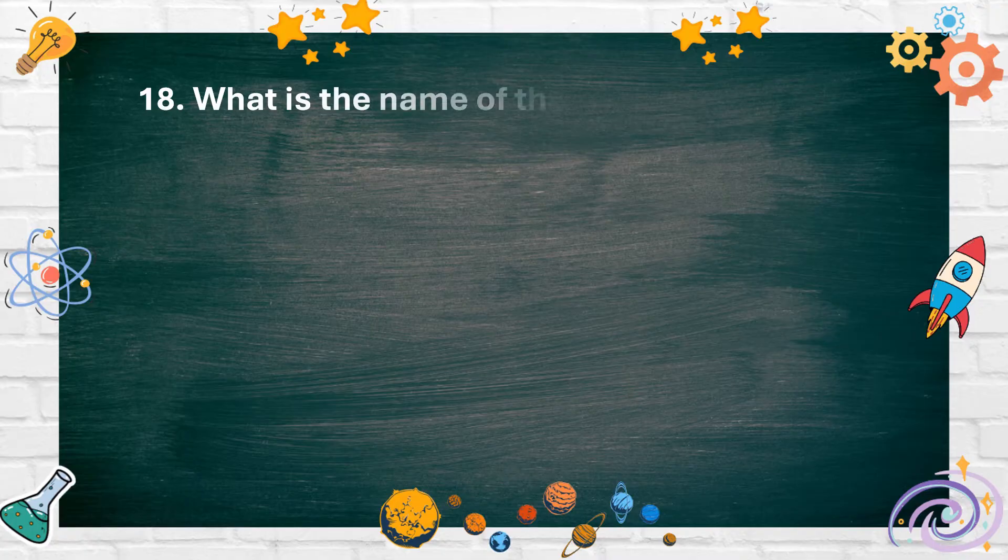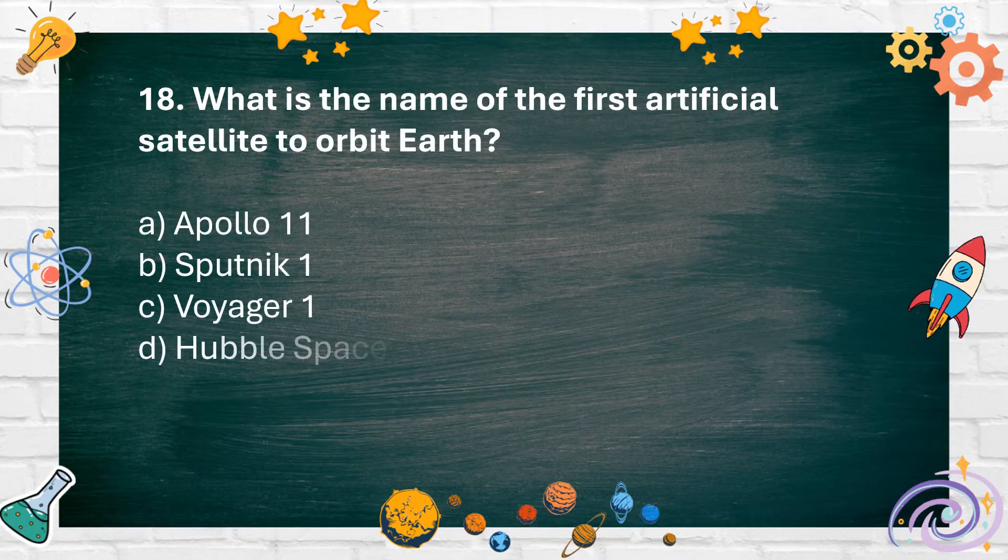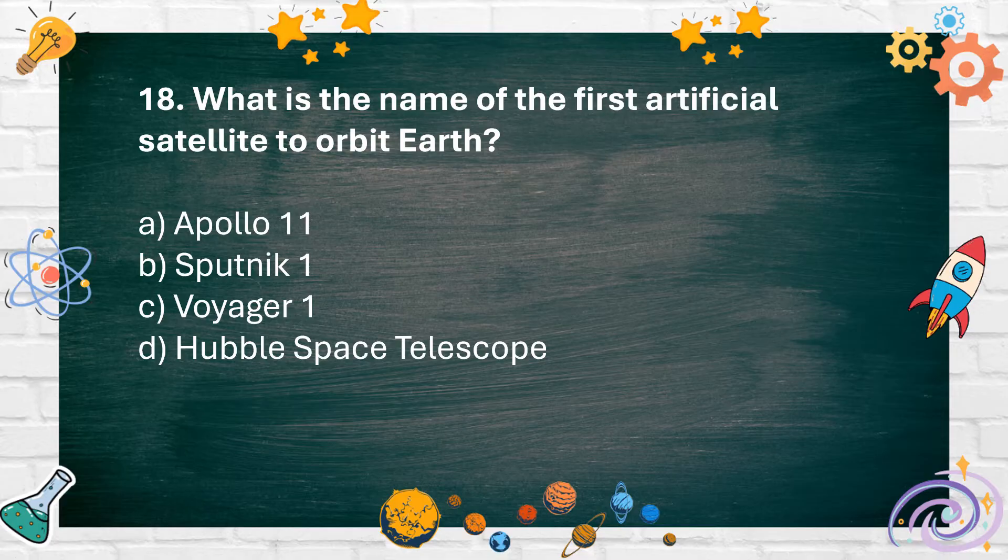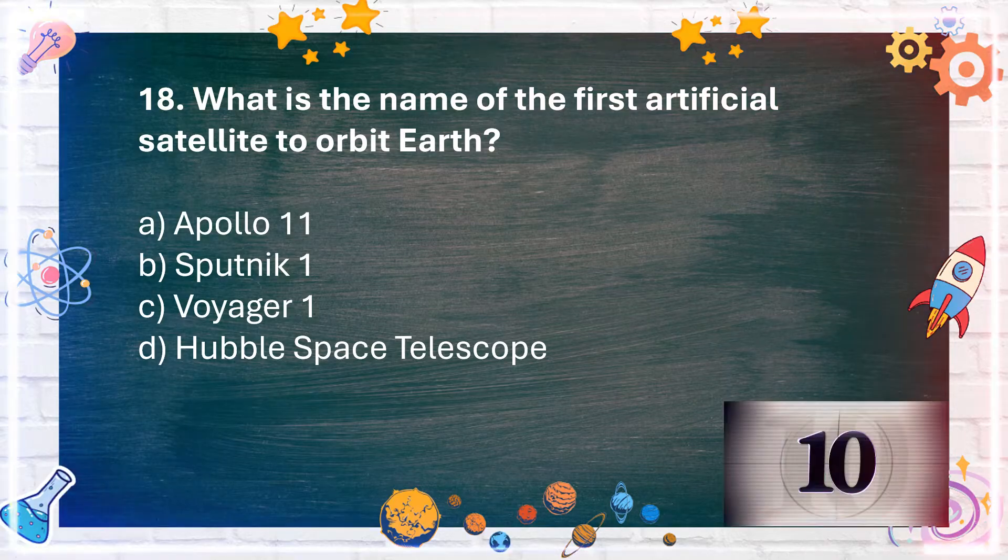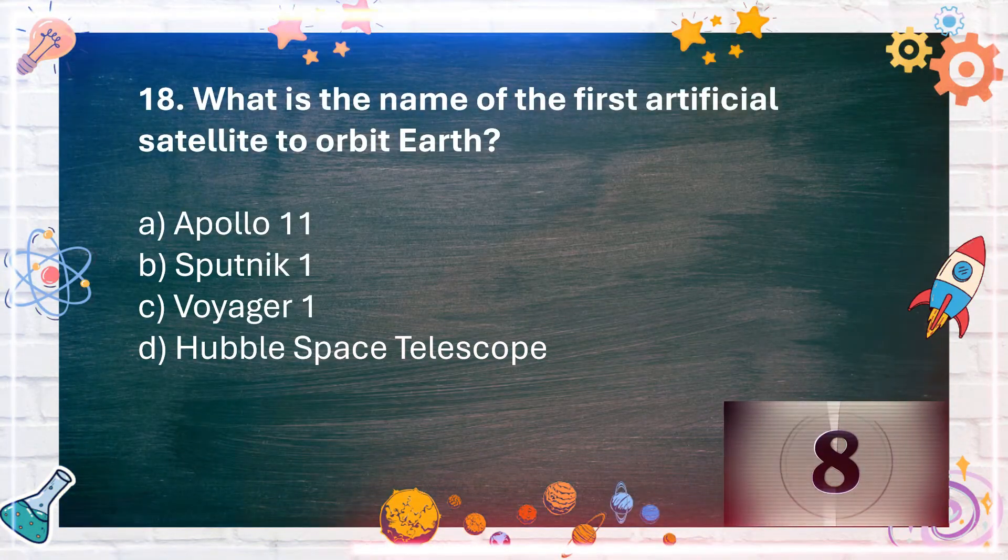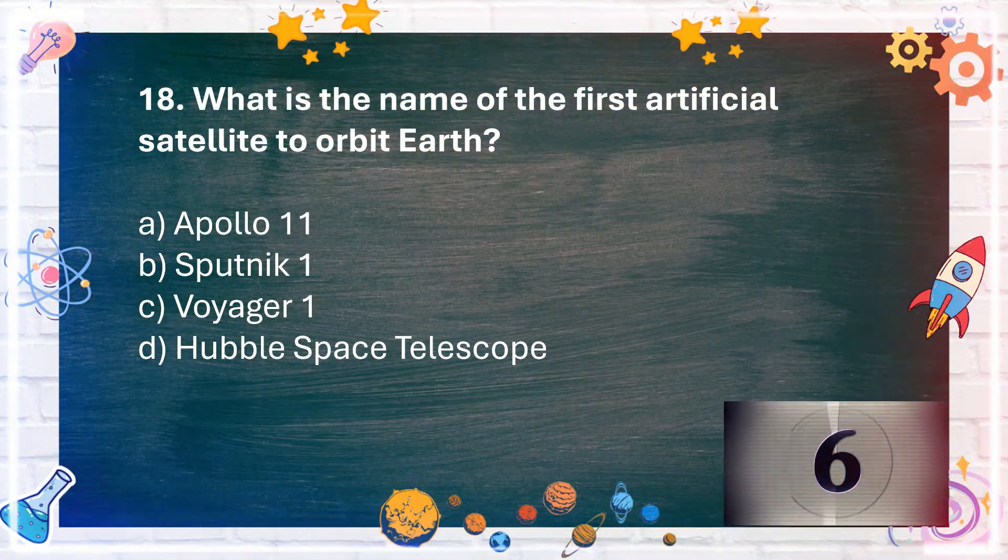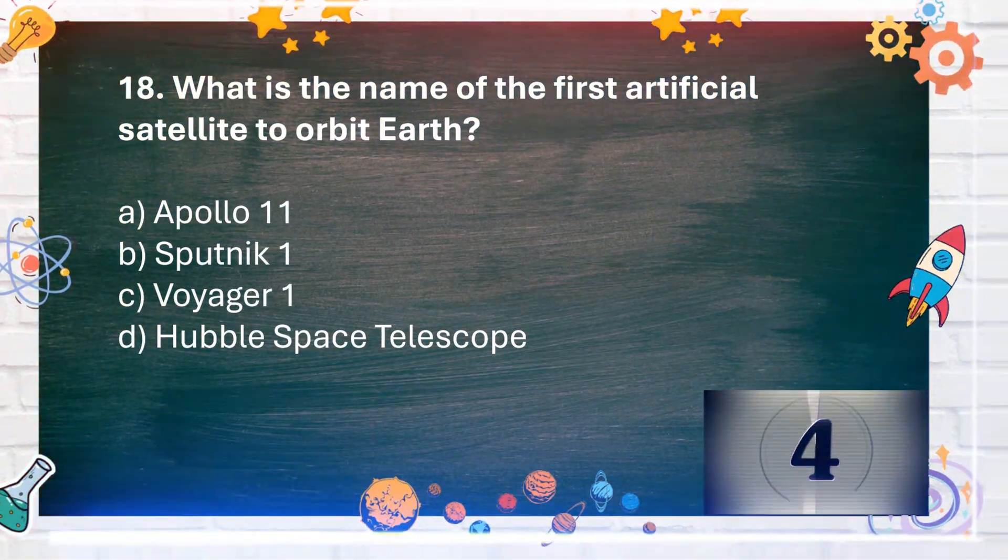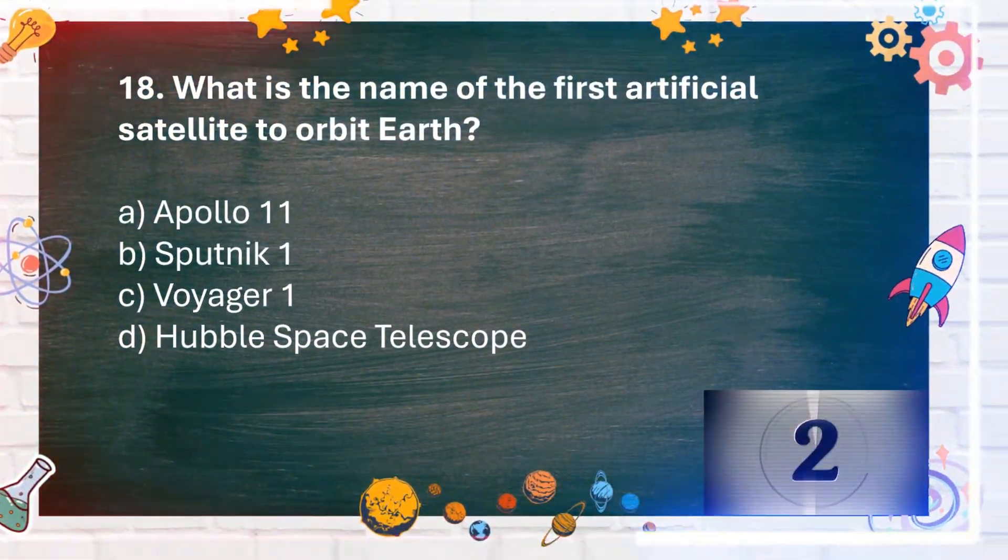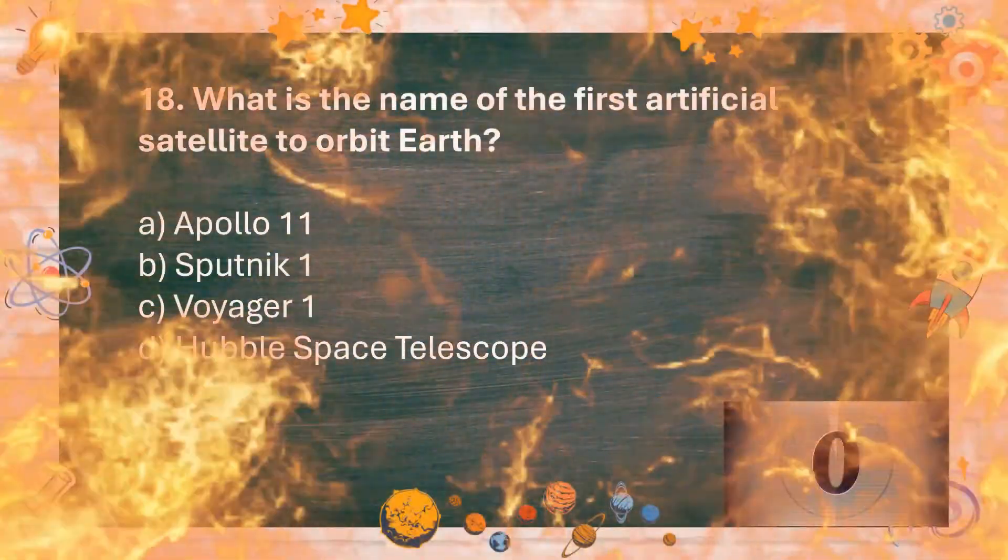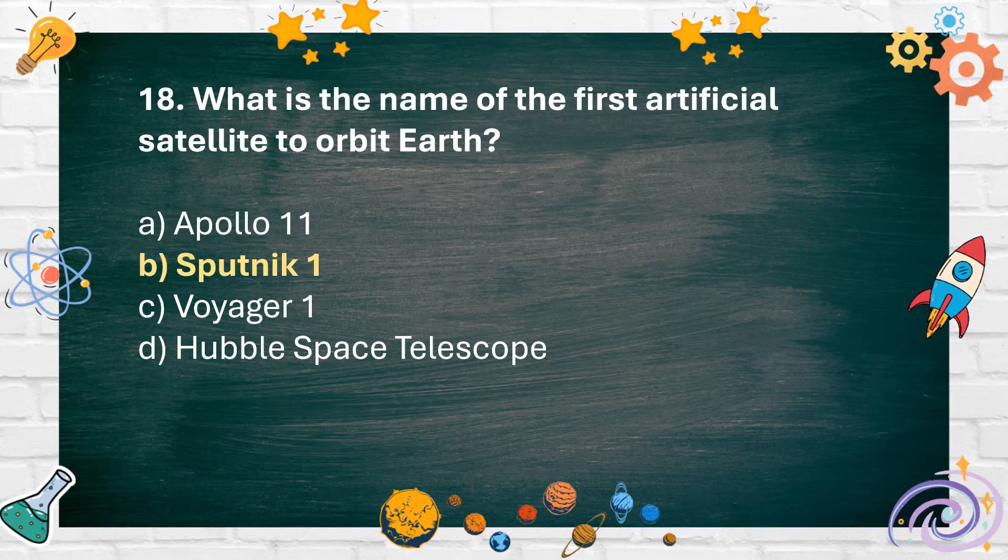Number 18: What is the name of the first artificial satellite to orbit Earth? A. Apollo 11, B. Sputnik 1, C. Voyager 1, D. Hubble Space Telescope. The answer is B. Sputnik 1.